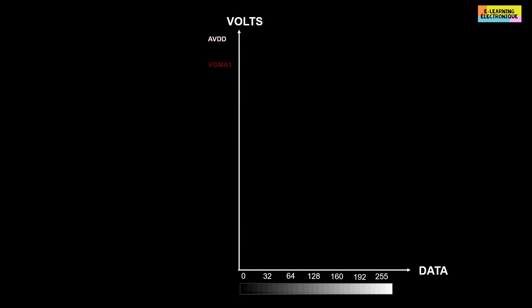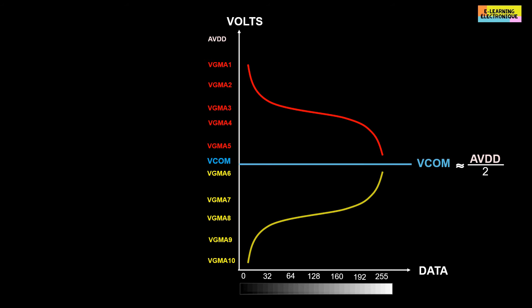To better understand the role of the V com voltage and gamma voltages we will use a graph. On the horizontal line is represented the scale of gray level coded on 8 bits with values going from 0 which is the black color to 255 which is the white color. On the vertical axis are noted the gamma voltages and the V com. The curves obtained have this aspect. We see that the V com voltage is in the middle of the gamma voltages and it has a value about half of the AVDD voltage. In general the V com is between 5 to 7 volts. The V com will serve as a reference value. The gamma voltages above the V com, that is to say here the gamma voltages from 1 to 5 are considered as voltages with positive polarity and the voltages below the V com from 6 to 10 are considered as voltages with negative polarity.